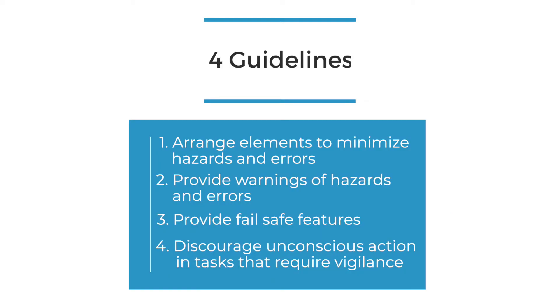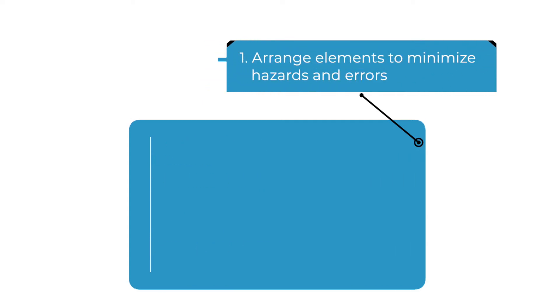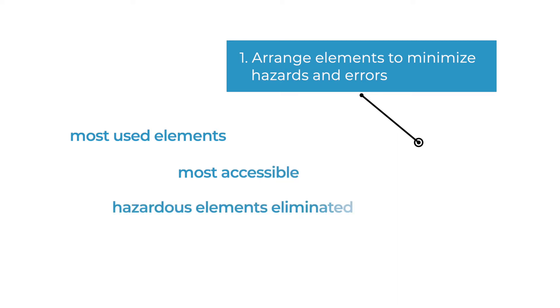Tolerance for Error has four guidelines. First, arrange elements to minimize hazards and errors. Most used elements should be most accessible, while hazardous elements are eliminated, isolated, or shielded.